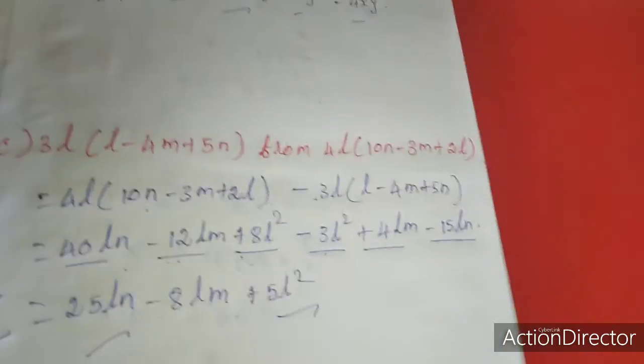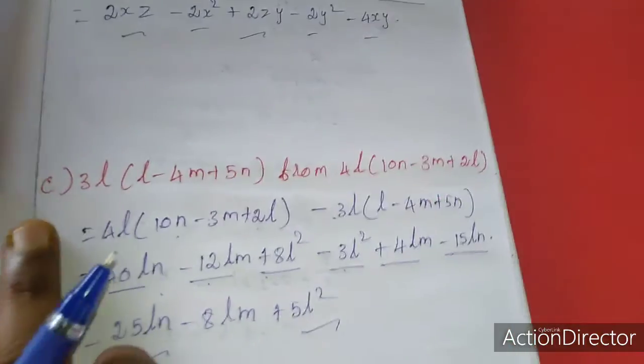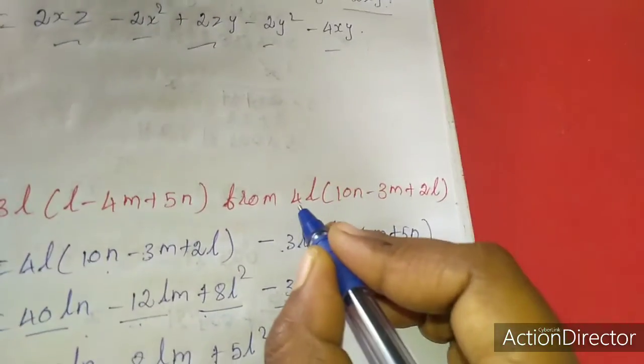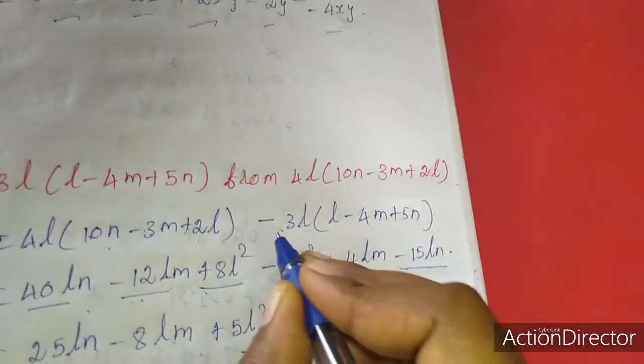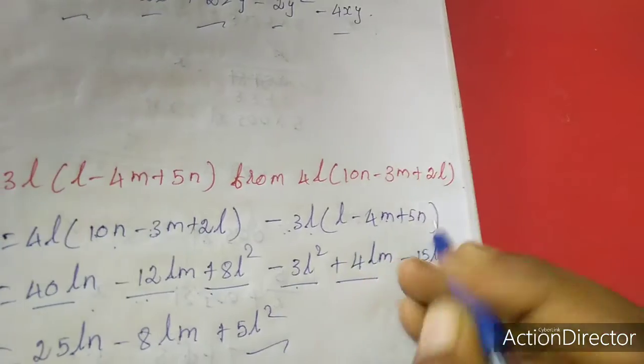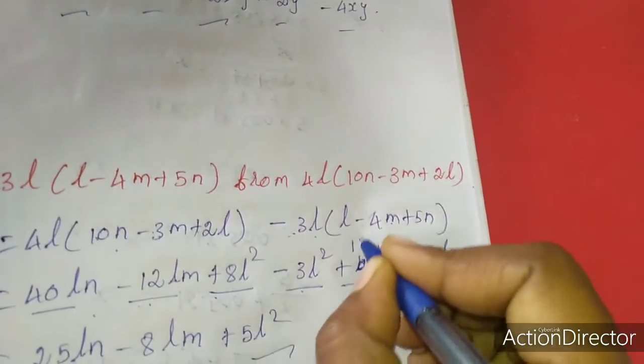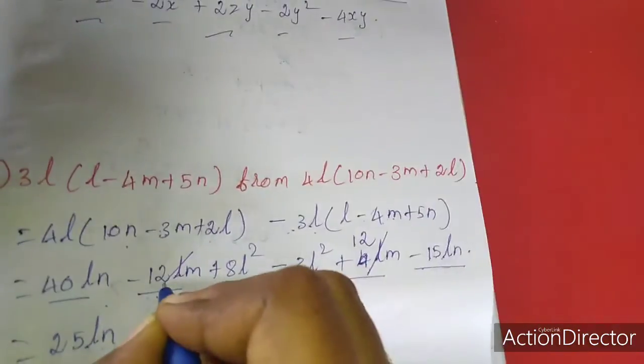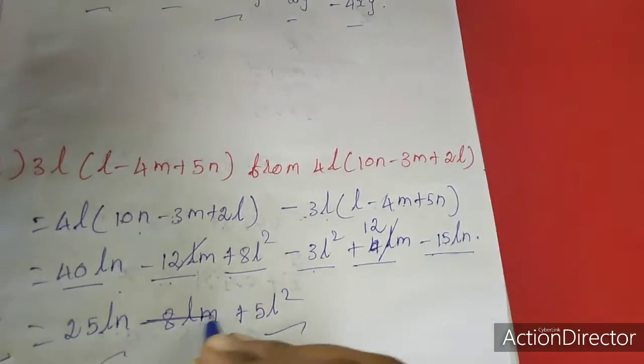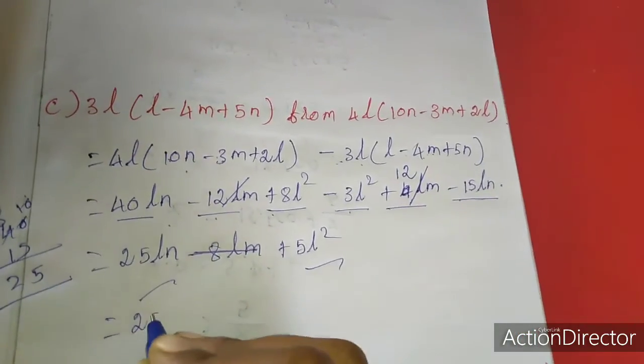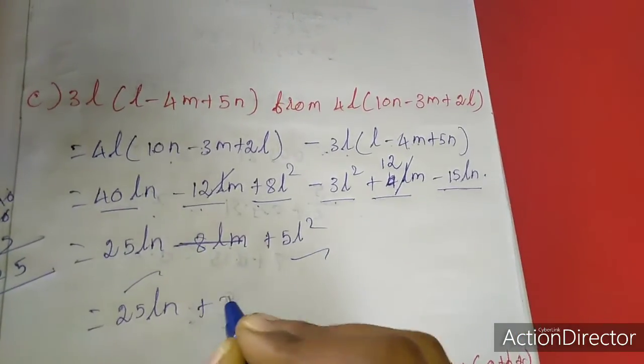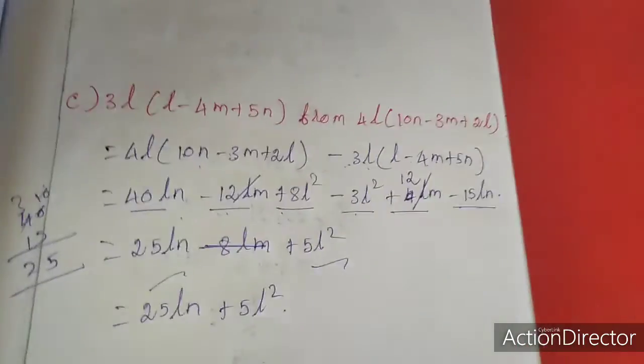Sorry, I did one mistake. See here, minus 3L and minus 4, while multiplying we get 12. So this 2 will be cancelled, this will not come. So the answer is 25LN plus 5L². Thank you, dear.